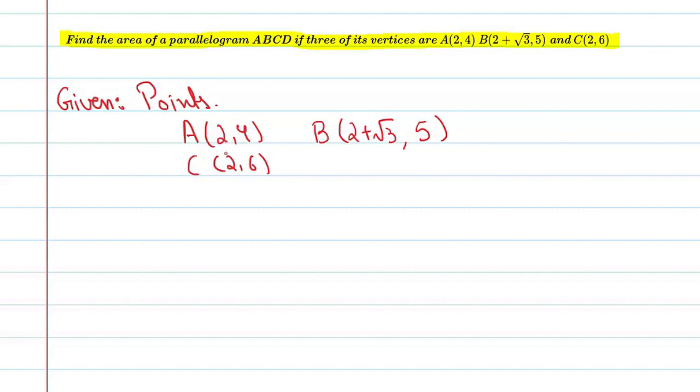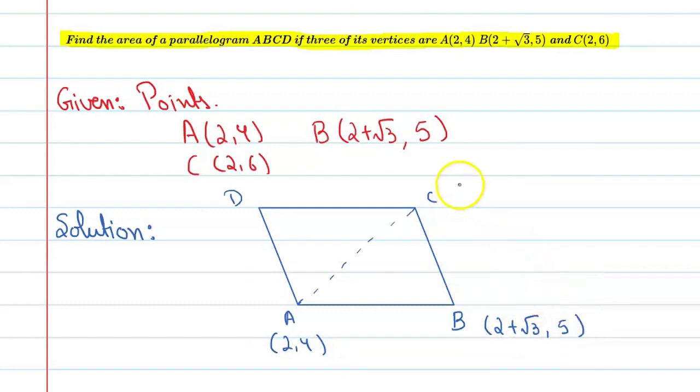Now we need to find the area of parallelogram ABCD. Let's start the solution. Here we will take a figure and explain how to apply this concept. You can see that this is parallelogram ABCD. Let's take the coordinates. This point is (2,4), this is (2 plus root 3, 5), and point C is (2,6). The D coordinates we have not given.